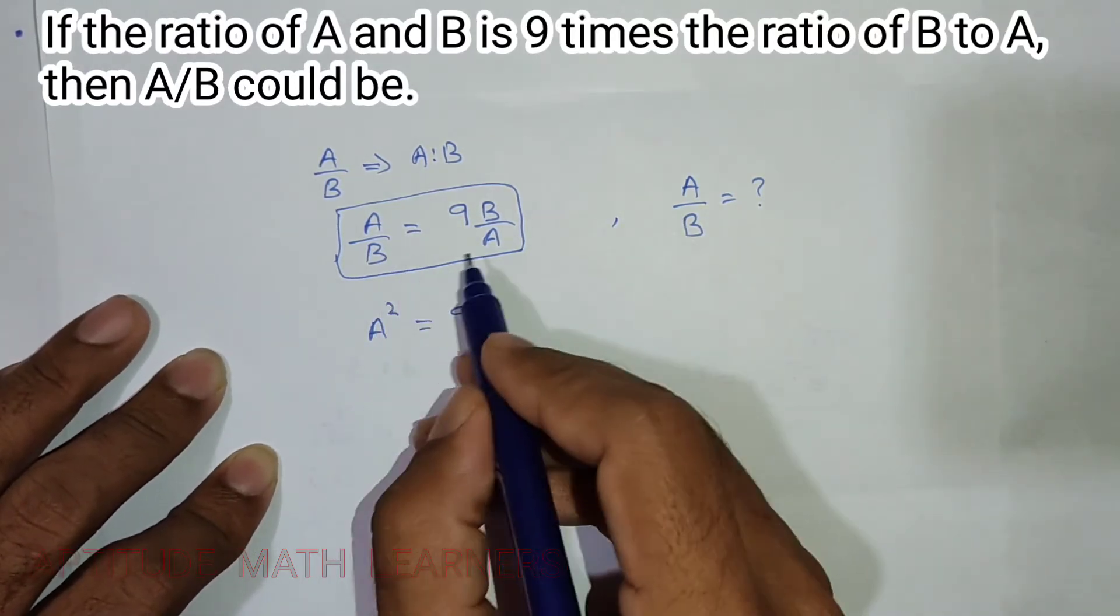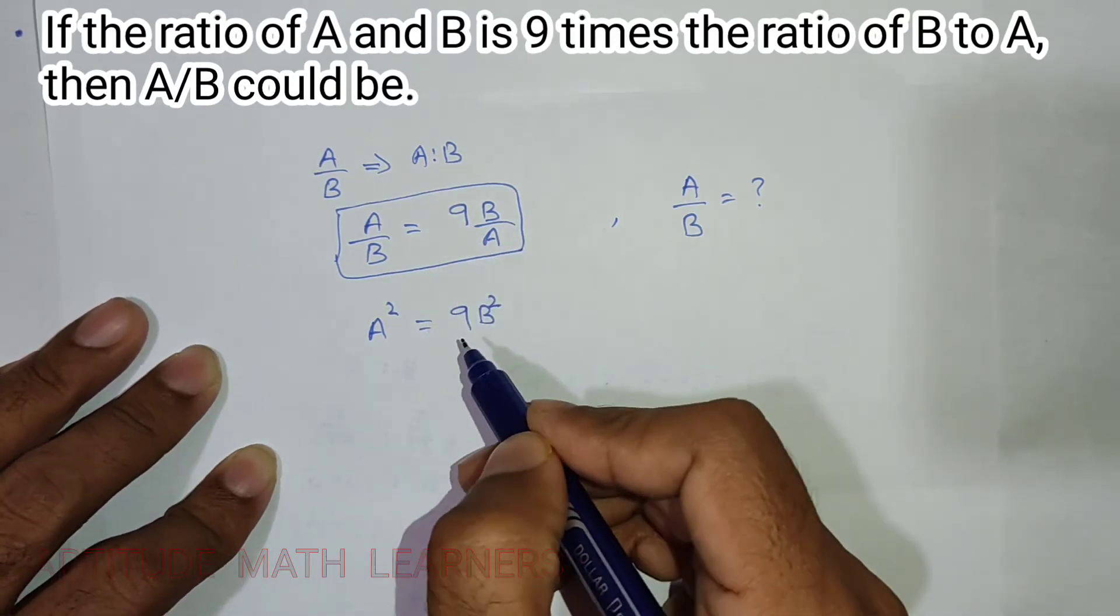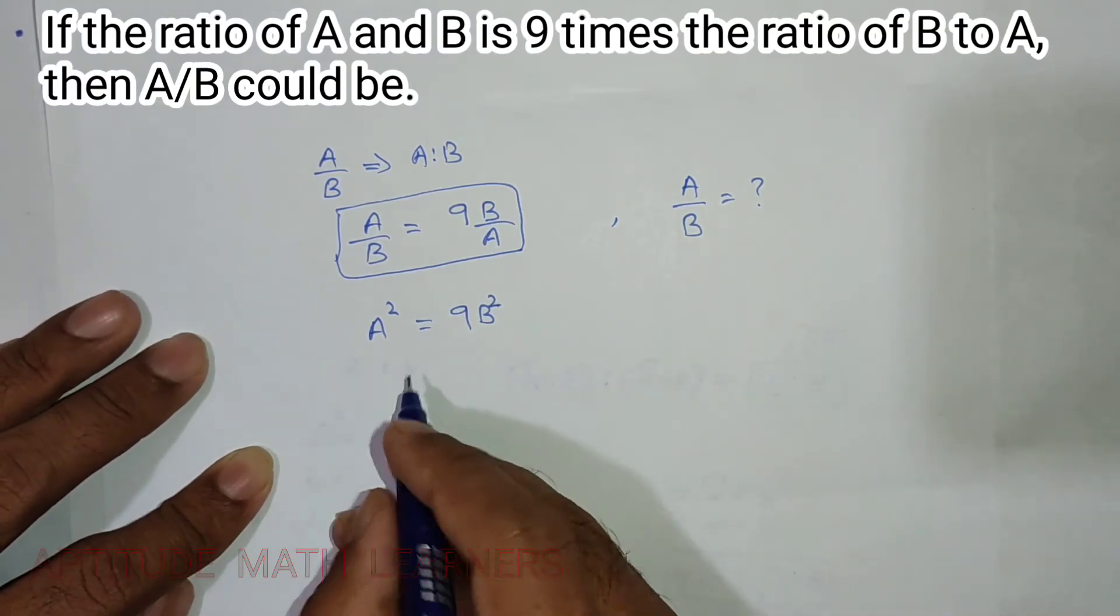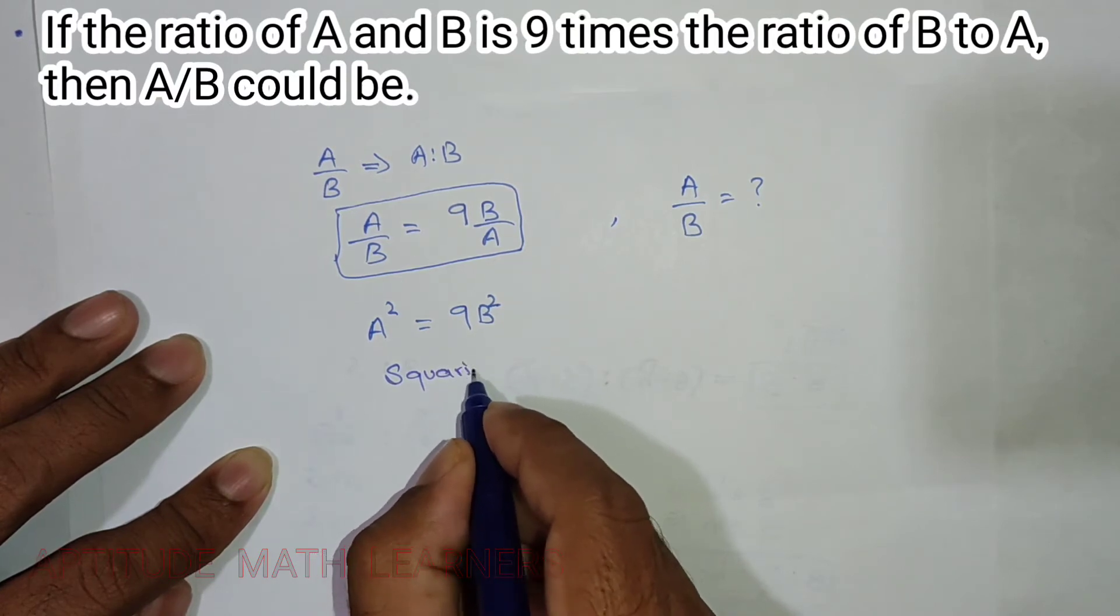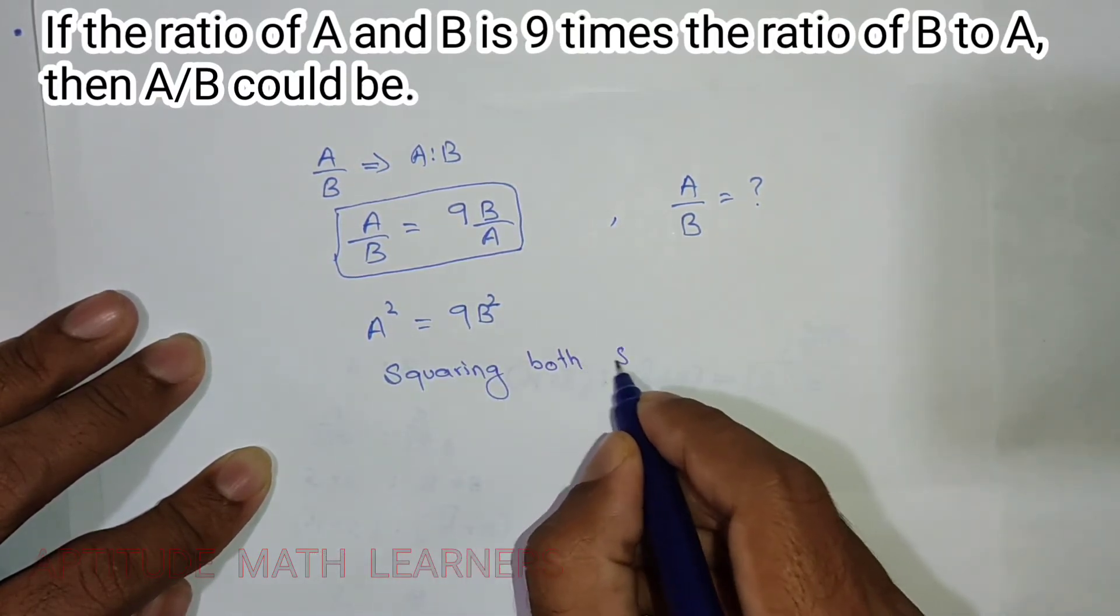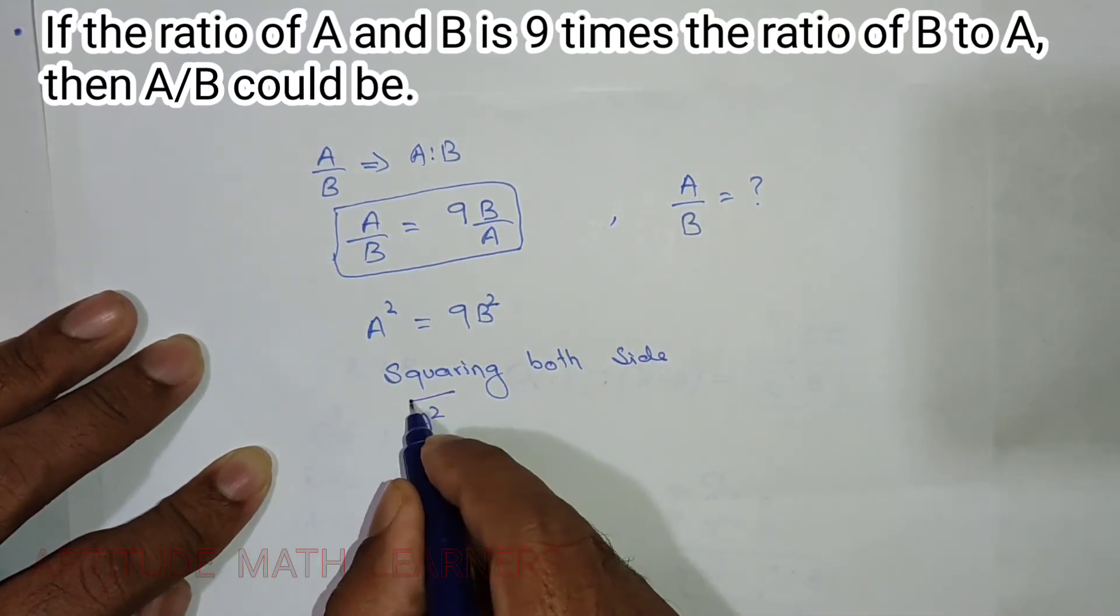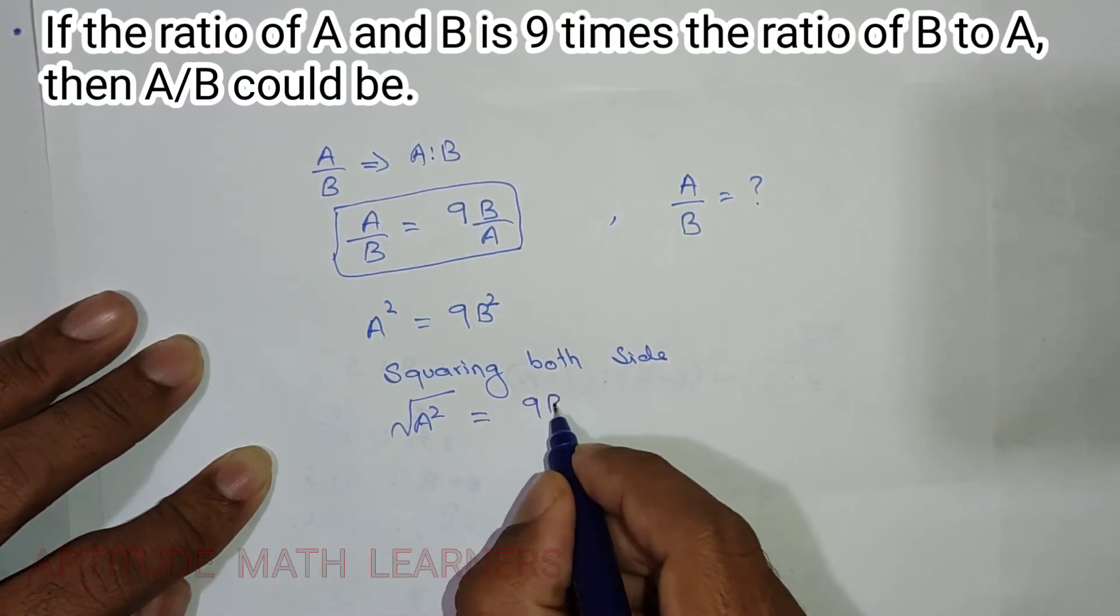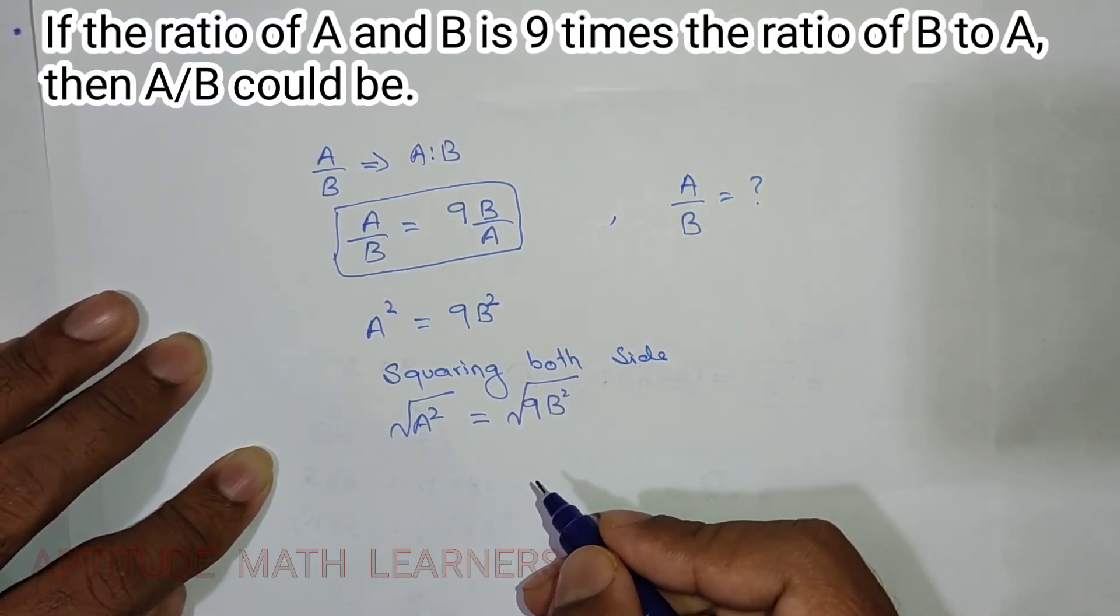B into B becomes B squared. Now we just have to take the square root from both sides. A squared square root is equal to 9B squared square root.